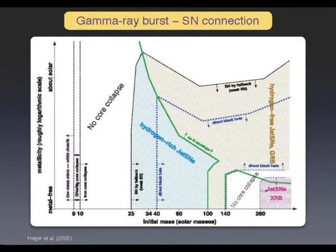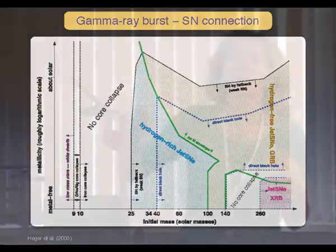They occur in very massive objects, while supernovae Type 2 are much more common events and can occur also in kind of evolved galaxies.